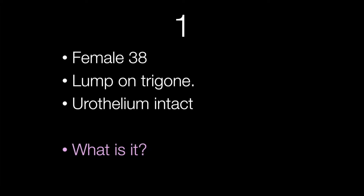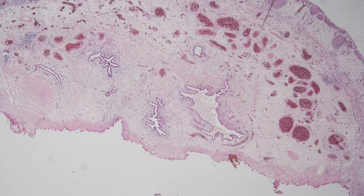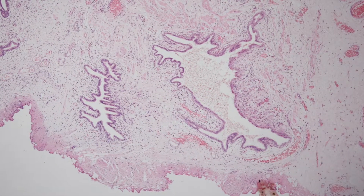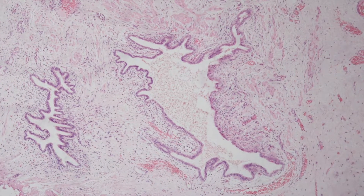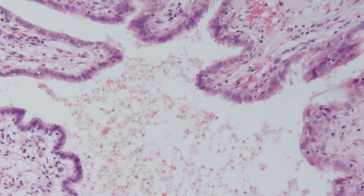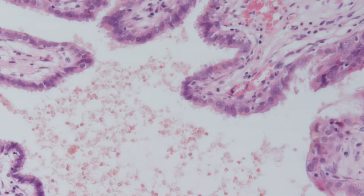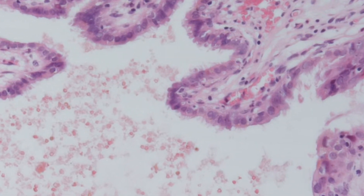The first case is a female of 38 with a lump on the trigone. The overlying urothelium is intact. What is the lesion? This is a low power view. Here's a higher power view. As we zoom in even further, have a look at the epithelial cells. What type are they?